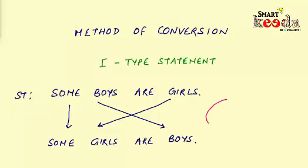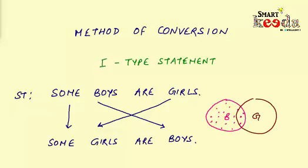Here is the circle of boys represented by dots, and another circle for girls represented by lines. Not all dots, but only some, are overlapped by lines — giving the inference that some boys are girls. The same applies in reverse: only some lines are overlapped by dots. So if the statement is 'some boys are girls,' the definite conclusion is 'some girls are boys.'